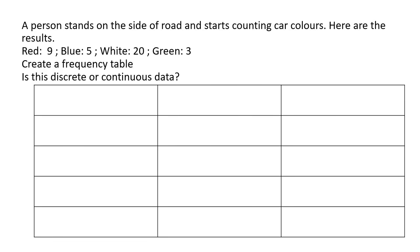Here we have a person who stands on the side of a road and starts counting car colors. Here are the results. This person saw that there were nine red cars, five blue cars, 20 white cars, and three green cars. They want us to create a frequency table.